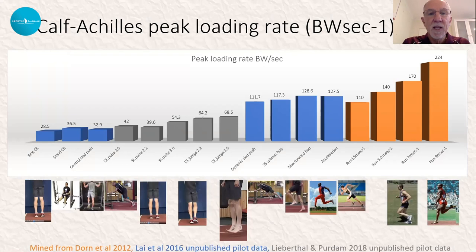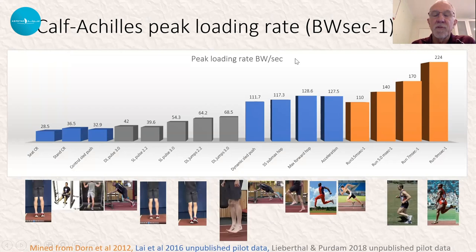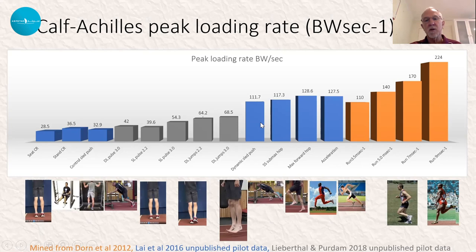Phil introduced this slide and I'll talk to it just briefly. We're looking at the rate of loading of the tissues. Slow work done within the gym is a long way short of what we need in fast running, but things such as dynamic sled push, submaximal hops, forward hops, and accelerations all approximate the sort of high body-weight loads of running. So what to put in between: we can use pulses — both double-leg and single-leg — then progress to faster rates of pulsing and plyometric-type activities like double-leg jumps.